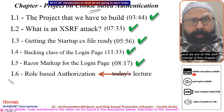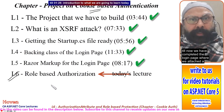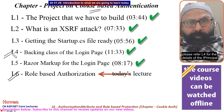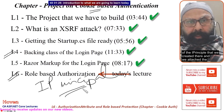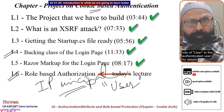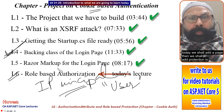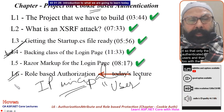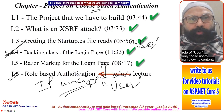We are on the sixth tutorial of this chapter on authentication. Till now we have completed the login page where we attached a role called 'user' to the authenticated user. Please refer to L4 for the details of the I-principle that we created there. Today we shall add a page and then add protection to it so that only authenticated users with the role of 'user' can view its contents.